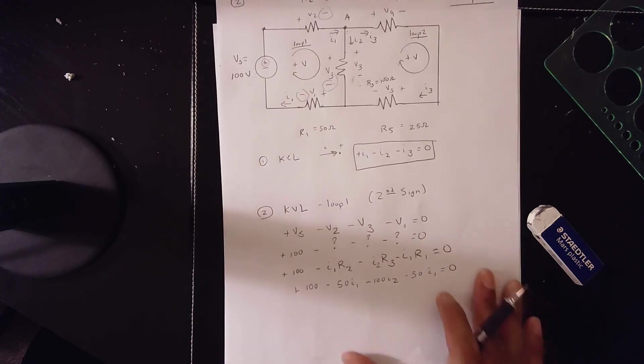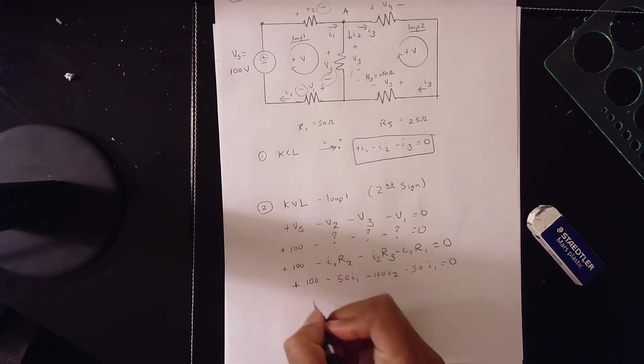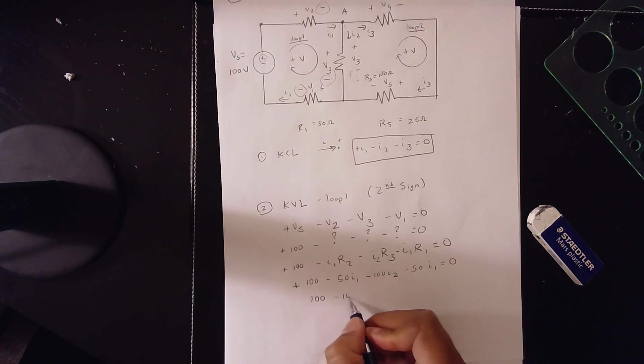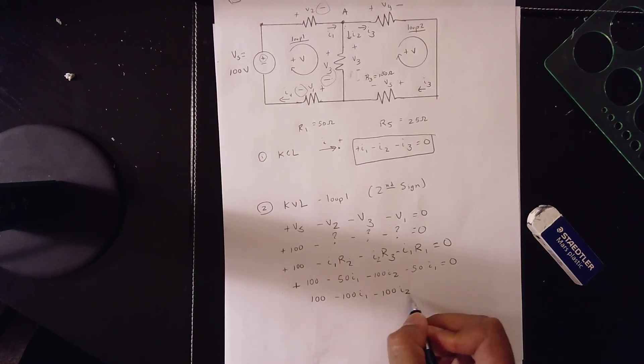So when you add this equation, when you add the number, when you add the variables up, it's 100 minus 100 I1 minus 100 I2 is equal to 0.